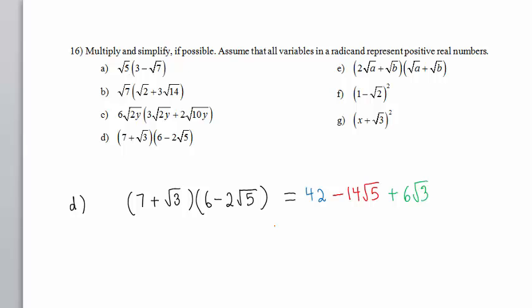And the last of FOIL, the L, positive square root of 3 times negative 2 square root of 5. Positive times negative is negative. The whole number is 2. We can multiply the radicals and get square root of 15.